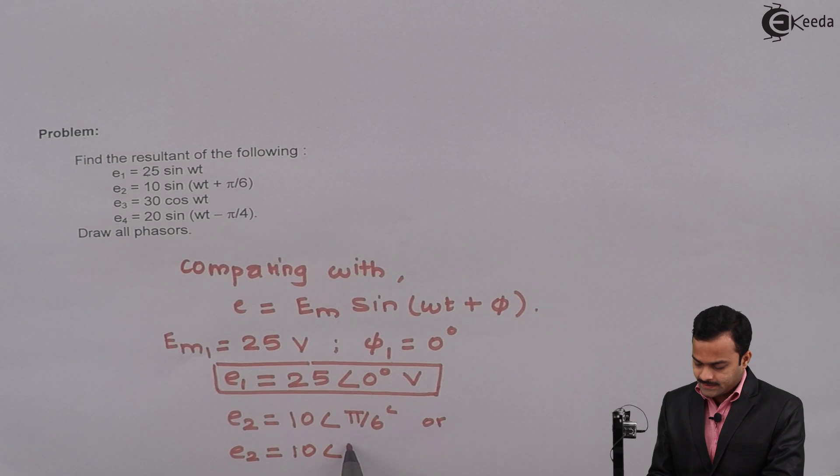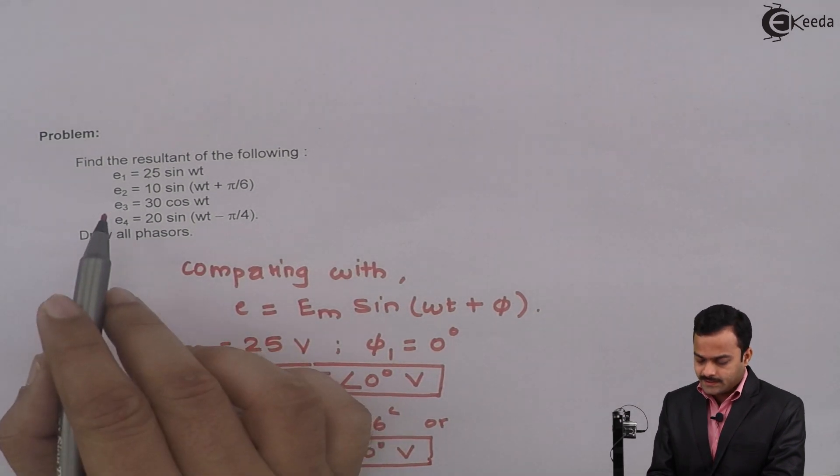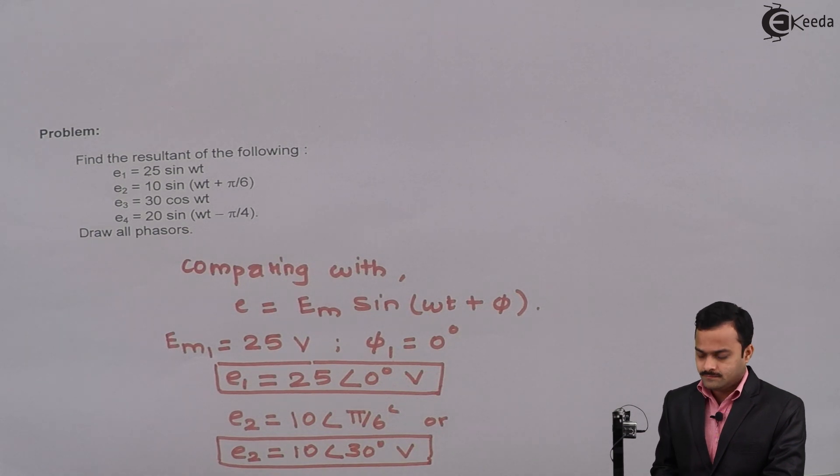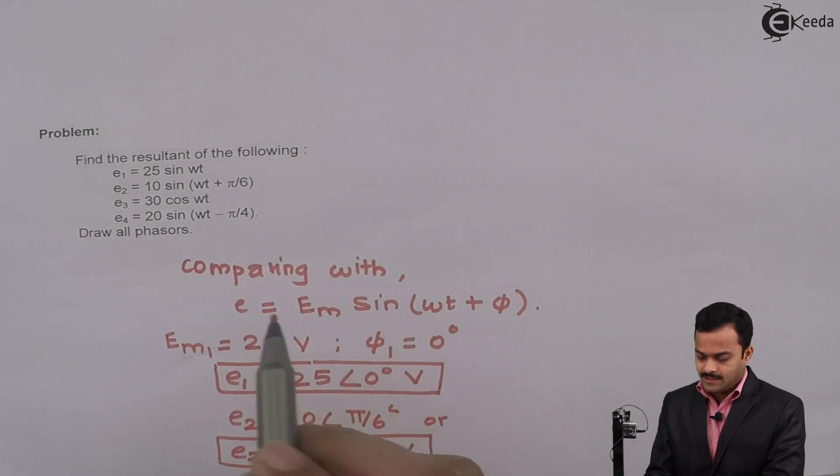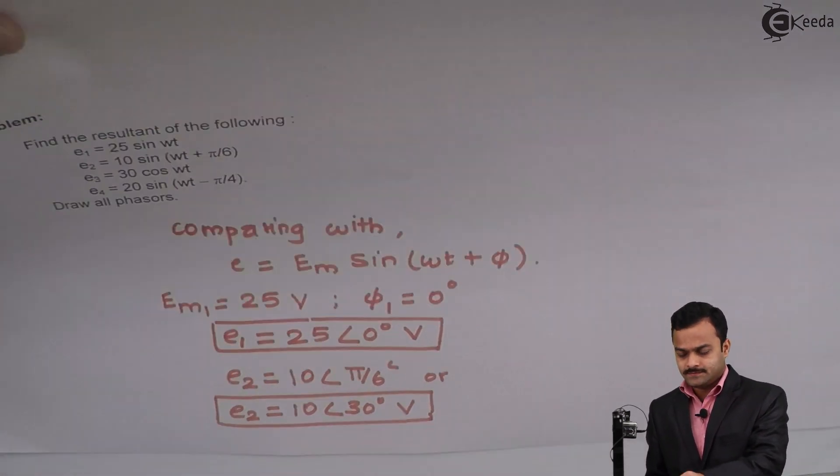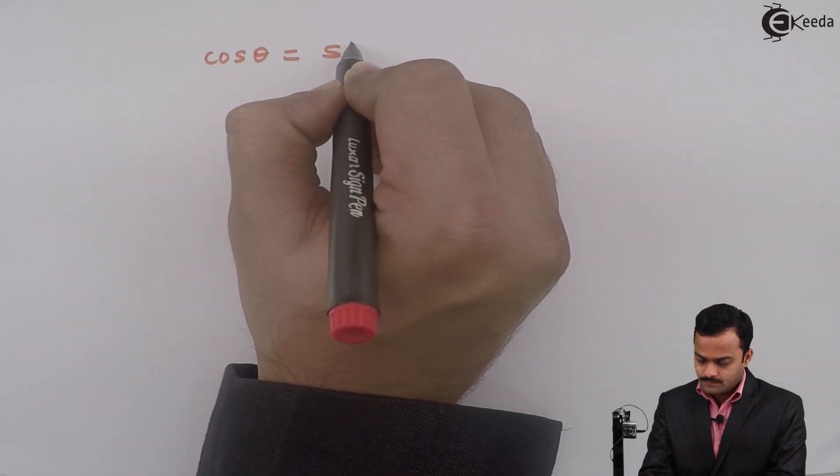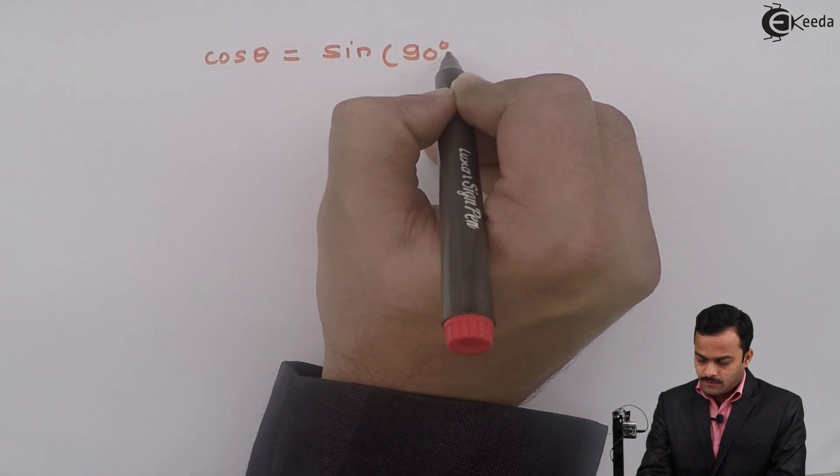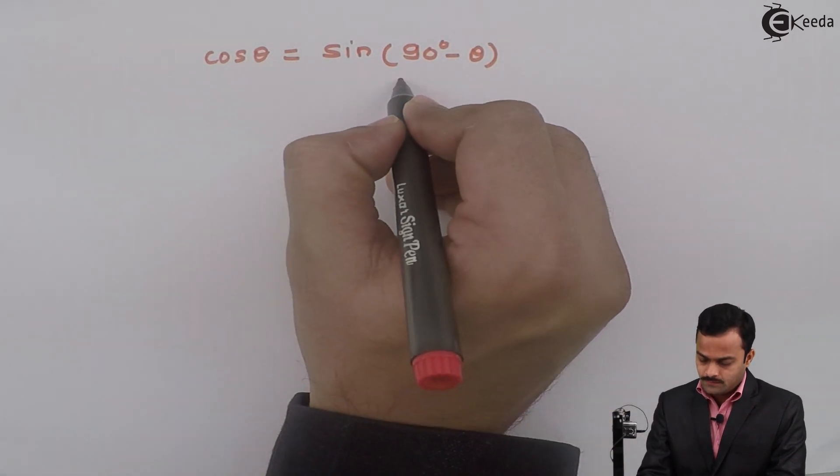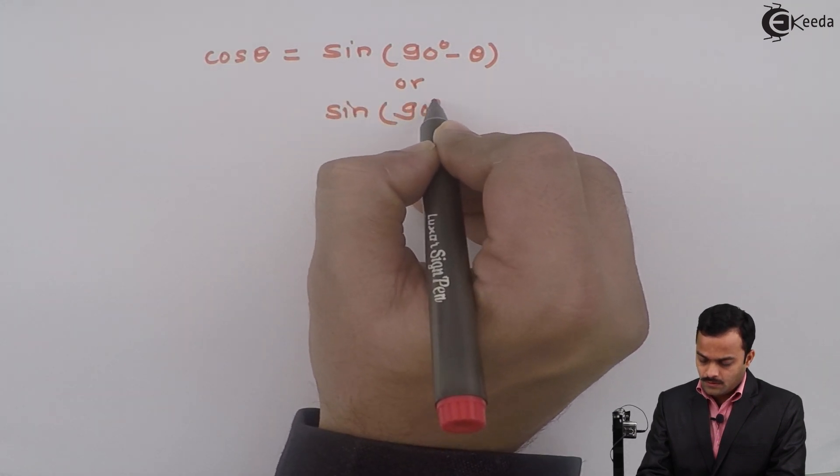I cannot compare E3 directly with this standard equation. Why? Because in the standard equation it is sine and here it is cosine, so I need to convert this cosine into sine. So the formula is: cos(θ) can be written as sin(90° - θ) or sin(90° + θ).